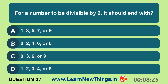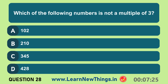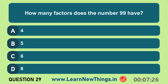For a number to be divisible by 2, it should end with an even digit. How many factors does the number 99 have?